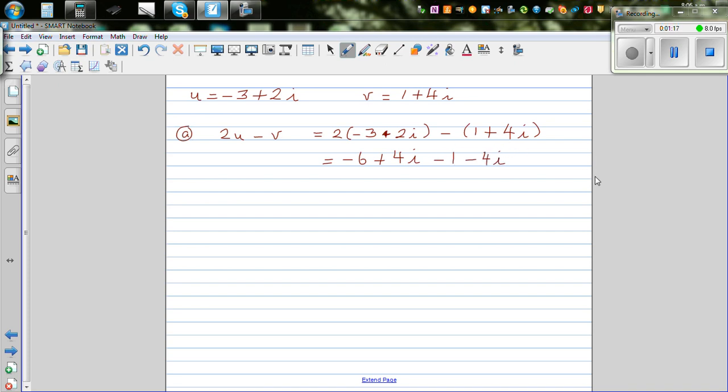Let us group the real parts with the real parts: minus 6 minus 1 plus 4i minus 4i. You can do this using vectors. So finally, your answer is minus 7. This is a simple manipulation of complex numbers.